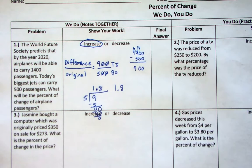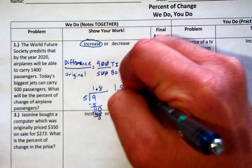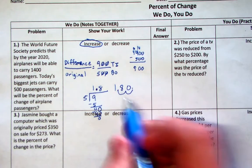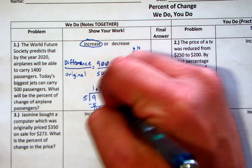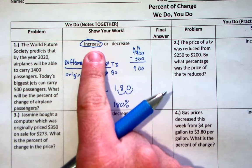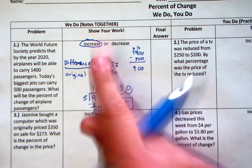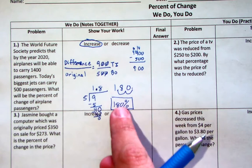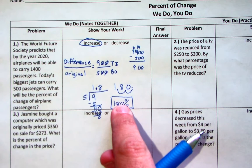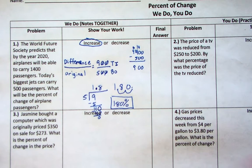How do you turn a decimal to a percent? You move the decimal two places to the right. Look at that — you now have 180 percent, and it was an increase. So notice your two answers: you have the increase and you have your percent. You will have to do both of these on your test next Wednesday and Thursday.